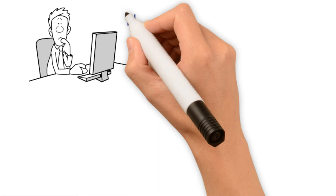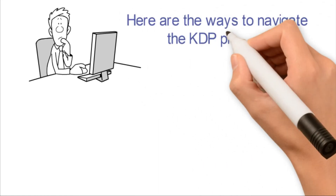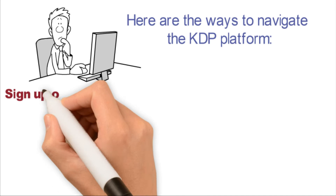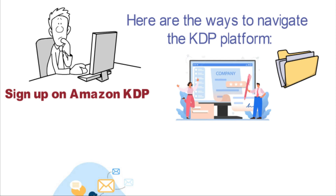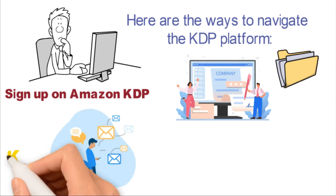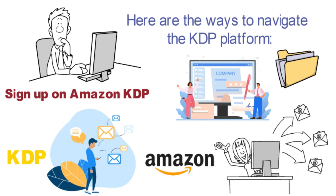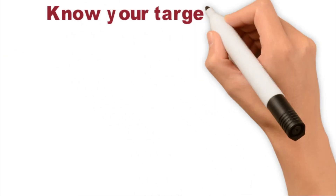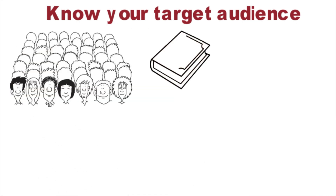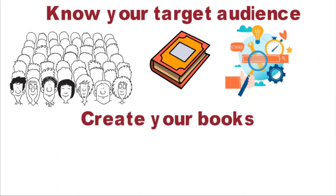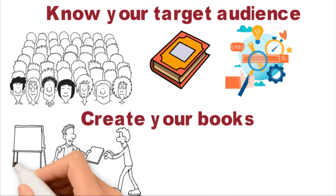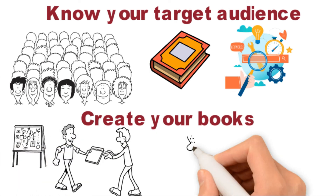How do you go about publishing on Amazon KDP? Here are the ways to navigate the platform. First, sign up on Amazon KDP — register on the platform by submitting your details. Ensure you give your real details and get a separate email account for your KDP so you don't miss any mail Amazon sends you. Next, know your target audience: identify what problem your book can solve and do thorough research afterward, especially keyword research. Then create your books — make sure you do not waste time.